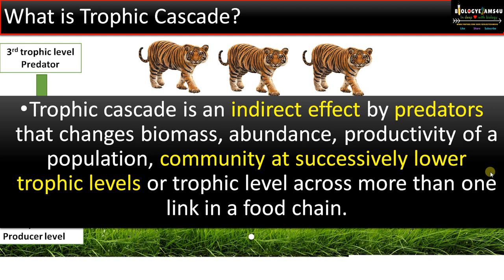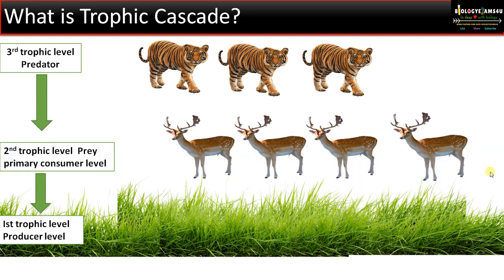Let us explain this concept with a very simple example. As we all know in a food chain, these green plants form the first trophic level or producer level. This is grazed upon by this deer population at the primary consumer level, that forms the second trophic level, which is preyed upon by the carnivores or predators that form the third trophic level.